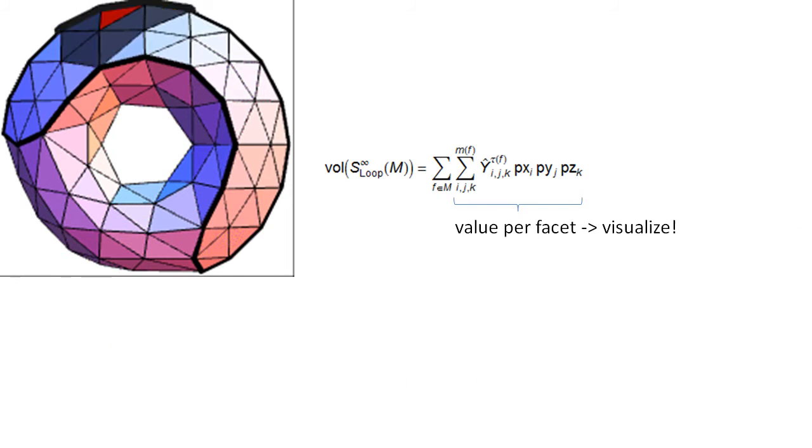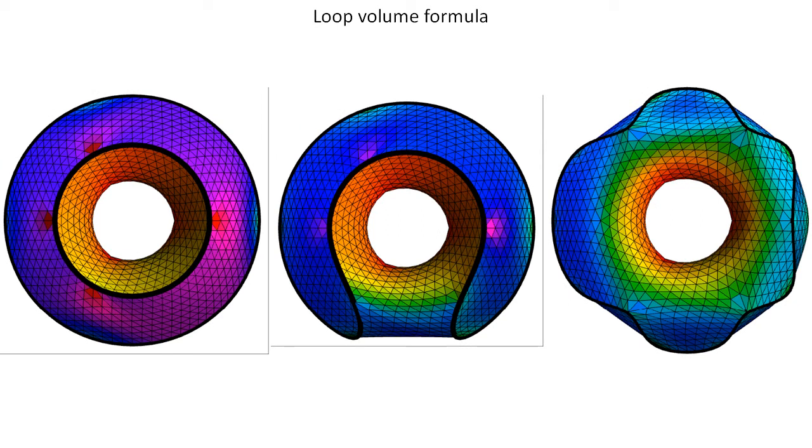Since the global volume is a sum over the volume contribution of each triangle, we can color each facet based on their contribution. Here are three example meshes.